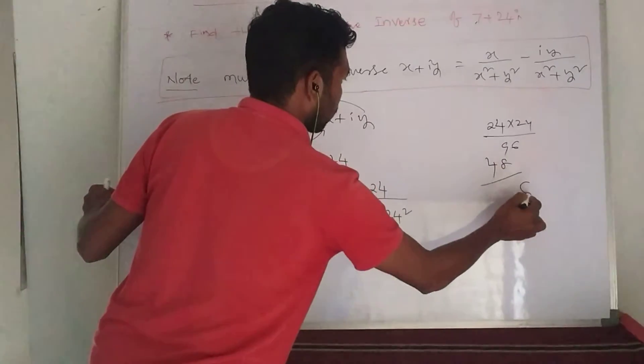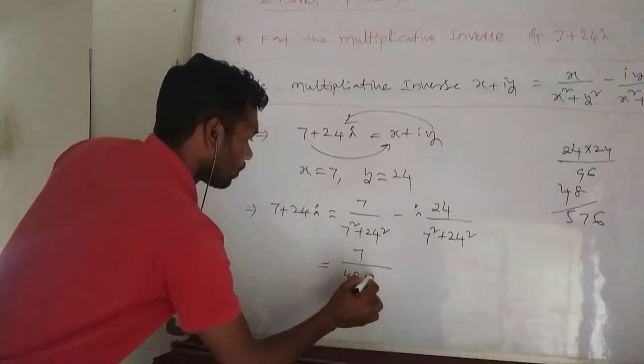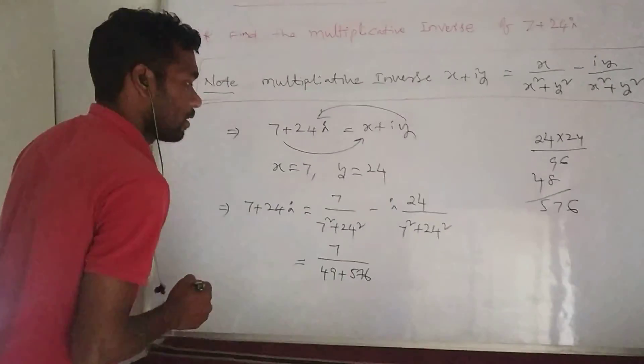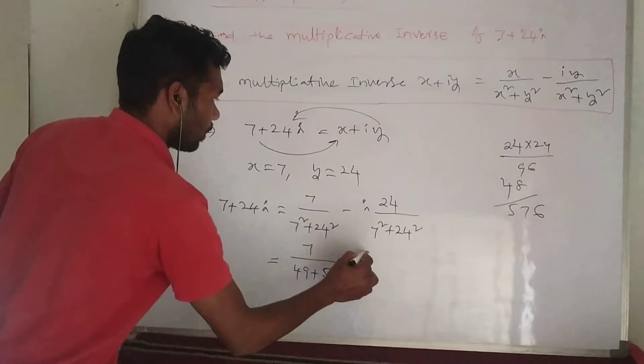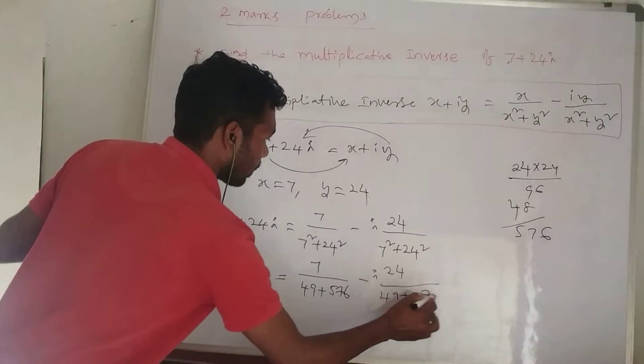49 plus 576 equals 625. So we get 7 by 625 minus i times 24 by 625.